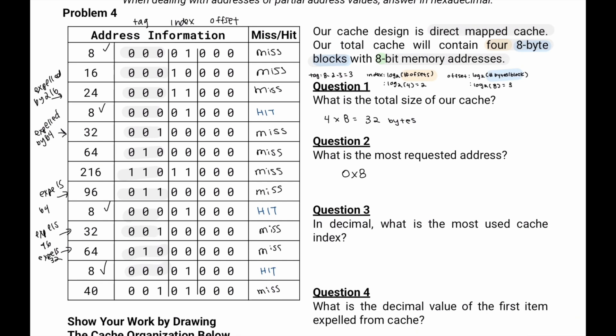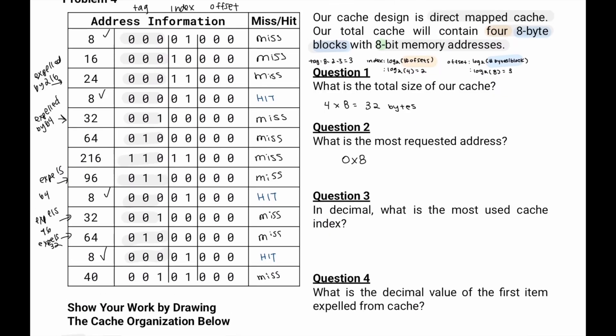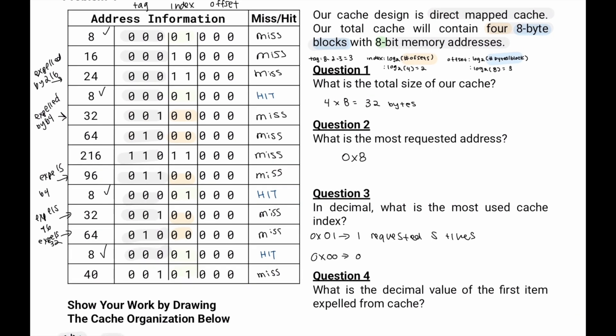We have question 3. In decimal, what is the most used cache index? So we know that 01 was requested 1, 2, 3, 4, 5 times. And then we know that 00 was requested 1, 2, 3, 4, 5 times as well. So 01 in decimal is 1 in decimal, which was requested 5 times, as well as 00, which was requested 5 times as well.